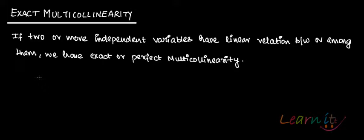Exact multicollinearity. Now what does exact multicollinearity mean? If two or more independent variables have a linear relation or an almost exact relation among them, we have the problem of exact or perfect multicollinearity.